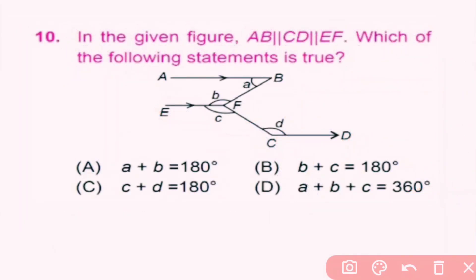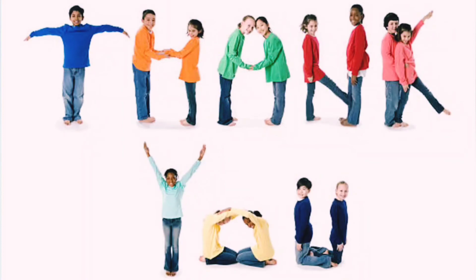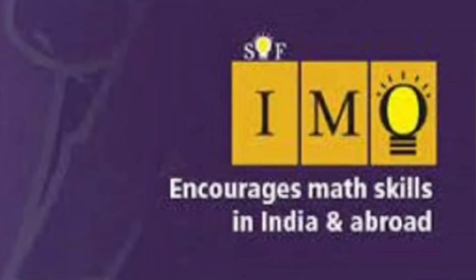Question number 10: In the given figure, AB is parallel to CD and CD is parallel to EF. Which of the following statements is true? Since AB is parallel to EF, the consecutive interior angles sum to 180, and alternate interior angles are equal. Only the statement 'a plus b equals 180' is correct, so A is the correct answer. Thank you for watching. I hope you liked the video. Do practice well and please don't forget to subscribe to my channel.